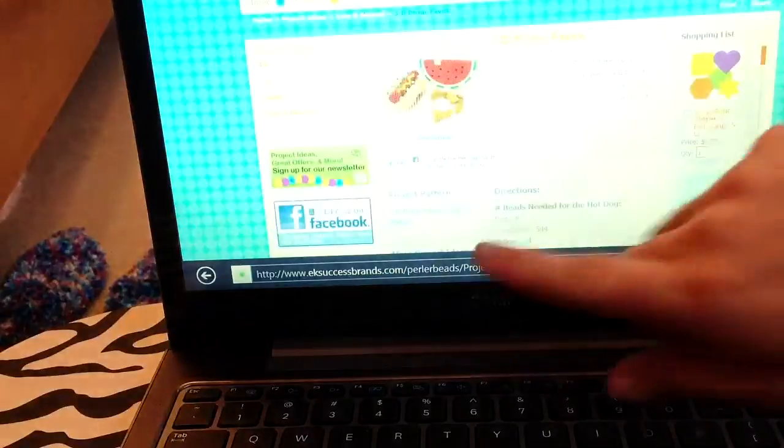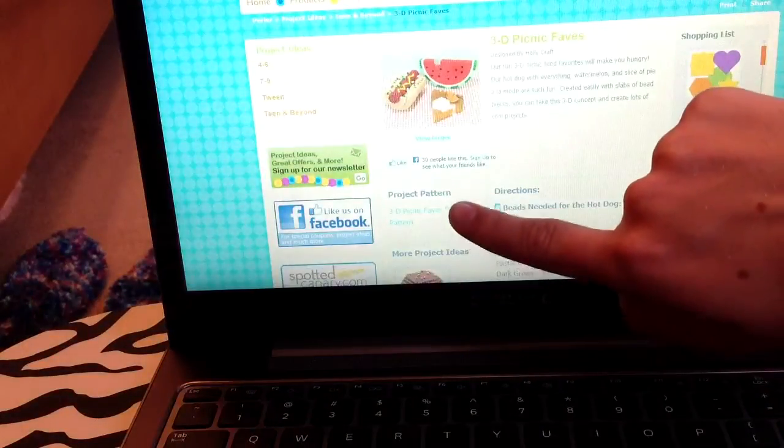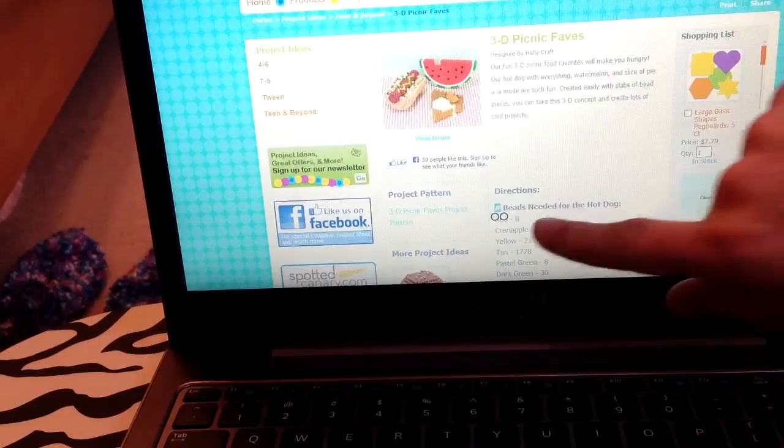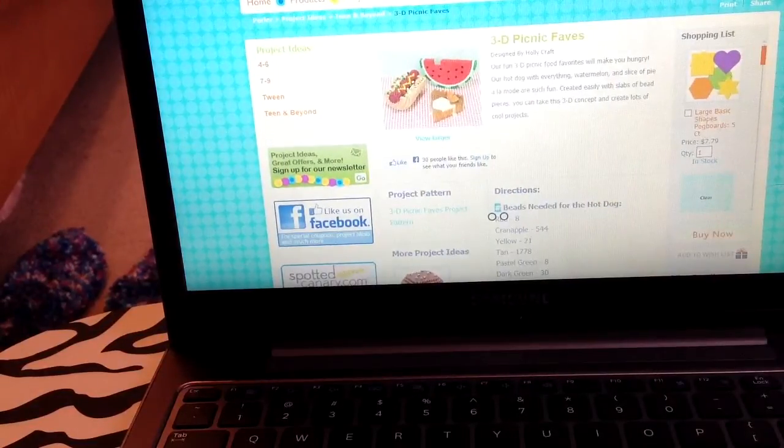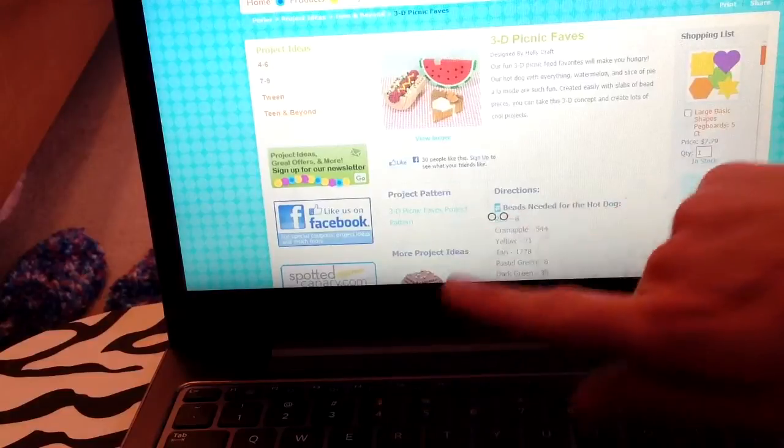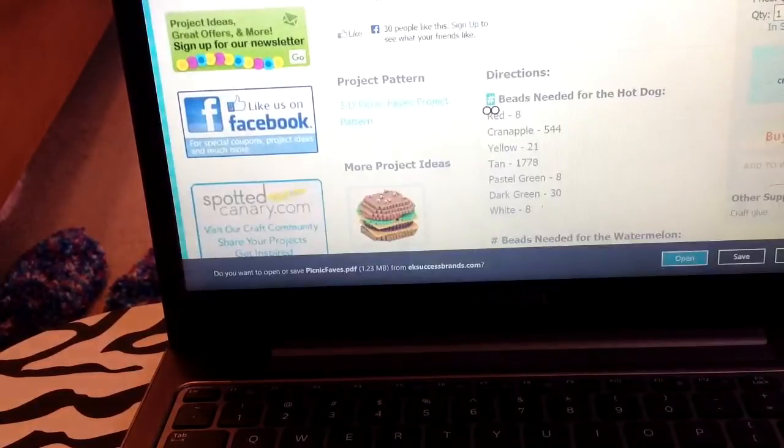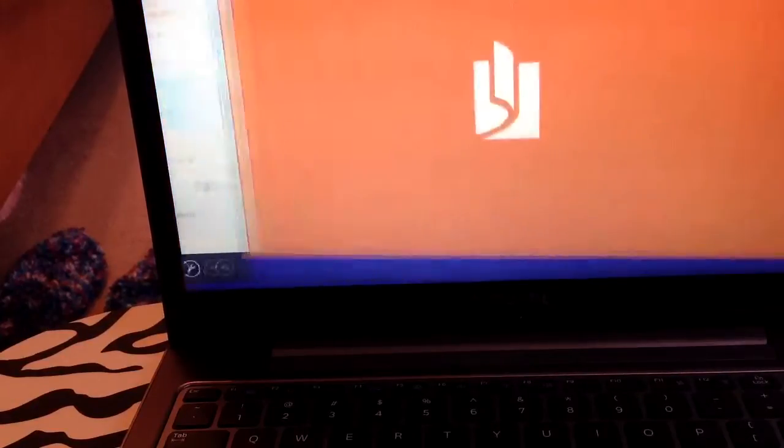There we go. And you're going to want to click right where it says 3D Picnic Favors Project Pattern. Sorry, I can't really see through my camera, it's so small. So you're going to click on that. Whoops. Click on it. And I'm going to hit open because I want it to come up.